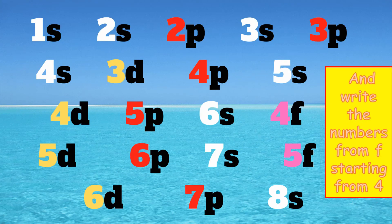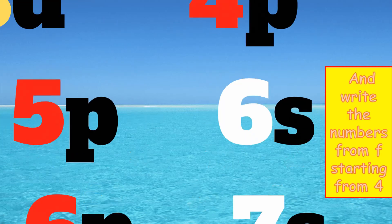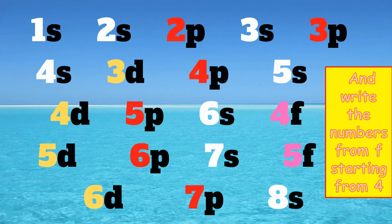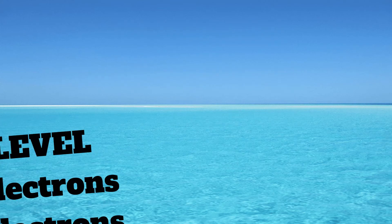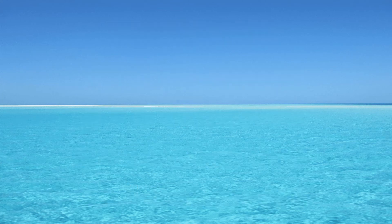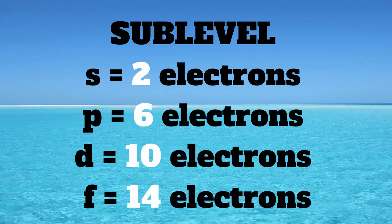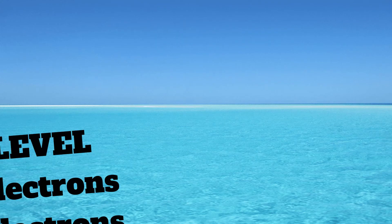And now, write the numbers from F starting from 4. So you're going to write 4f and 5f. In writing the electron configuration of a given element, remember the four sublevels: S stands for sharp, P for principal, D for diffuse, and F for fundamental. Also take note that the S sublevel can only hold a maximum of 2 electrons, P can only hold a maximum of 6 electrons, and D sublevel can only hold a maximum of 10 electrons.